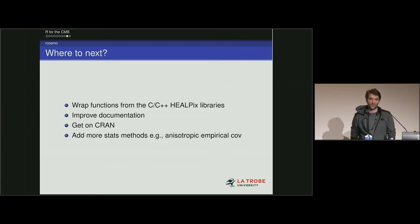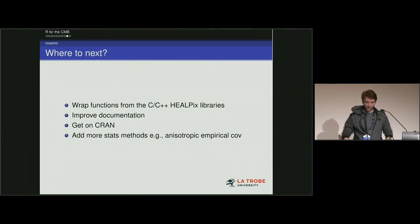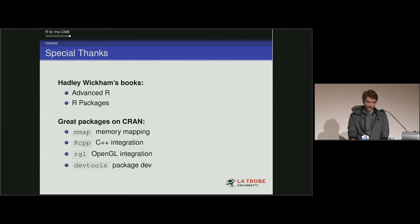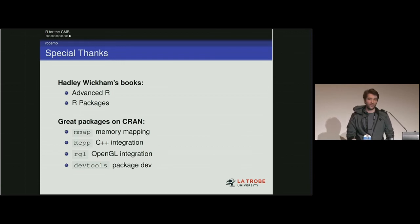Going forward, we want to wrap functions from the C and C++ HEALPix libraries. We also want to improve our documentation and get onto CRAN, and add more statistical methods like anisotropic empirical covariance estimation. Special thanks to Hadley Wickham's books on Advanced R and R Packages, and to the great packages mmap for memory mapping, Rcpp, RGL for OpenGL integration, and devtools — which includes testthat and various other developer tools.